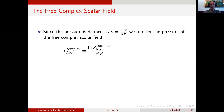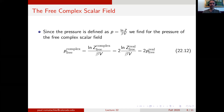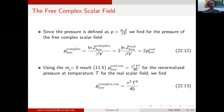Since the pressure is defined as the logarithm of the partition function over beta V, we find that the pressure of the free complex scalar field is just given as twice the logarithm of the real scalar partition function, which is nothing but twice the pressure of the free scalar field itself. In the case of vanishing mass, we can use the result from lecture 11 for the free pressure of a real scalar field, which in the renormalized case is pi squared T to the fourth over 90. The complex scalar field pressure is then twice this, giving pi squared T to the fourth over 45.